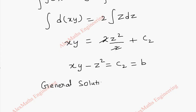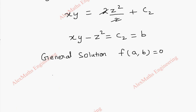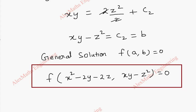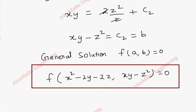The general solution is of the form f(a, b) = 0. So the solution is f(x² - 2y - 2z, xy - z²) = 0. Thus we have obtained the solution for the given partial differential equation using Lagrange's multiplier method.